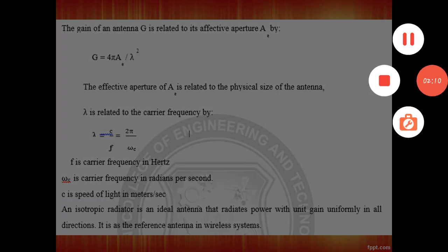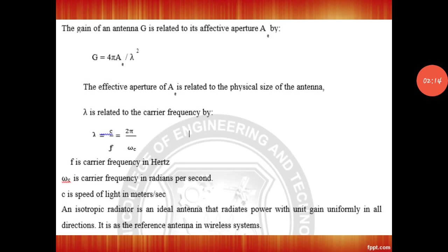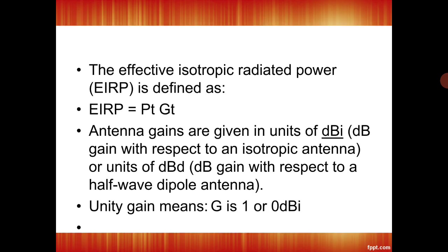Lambda can be related to the effective aperture. A is nothing but the effective aperture, which is related to the size of the antenna. Lambda is related to the carrier frequency — that is, lambda equals c divided by F, where F is the carrier frequency. The carrier frequency is a high frequency, and omega is the angular frequency represented in radians per second. C is the speed of light, and an isotropic antenna is an ideal antenna.